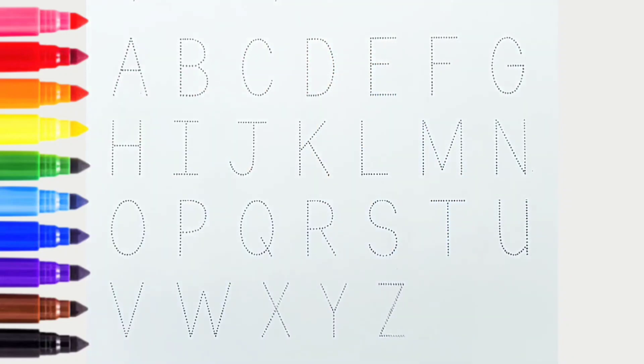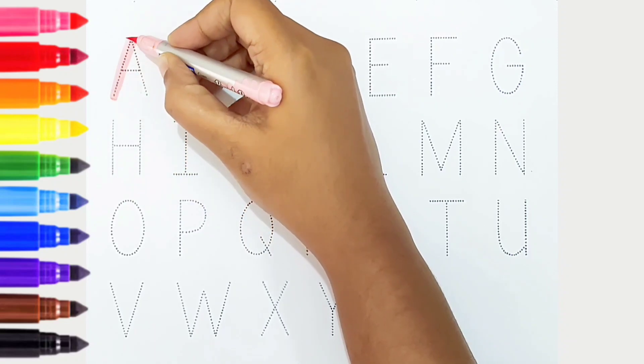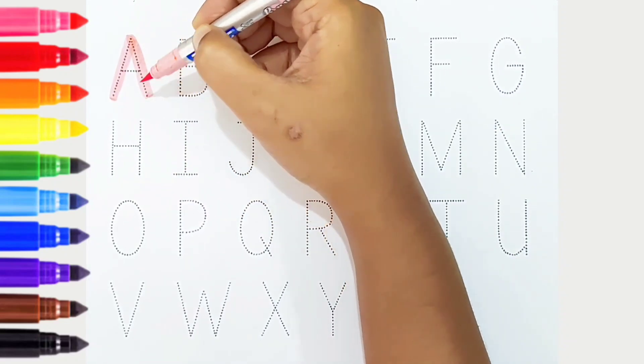Hi kids, today we can learn the alphabets from A to Z. Let's begin. A, light pink color, is for apple.